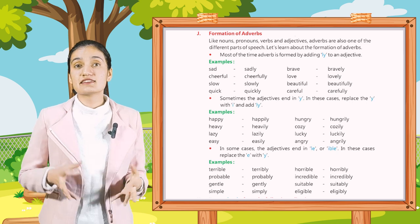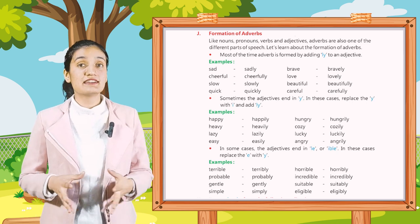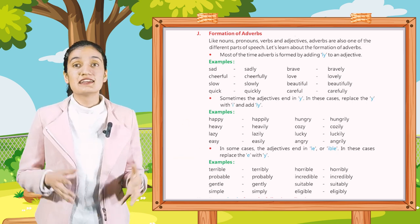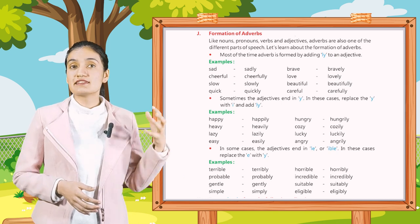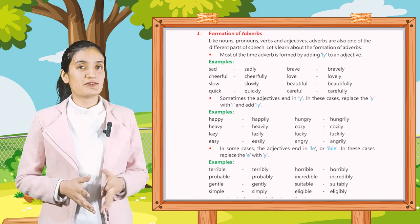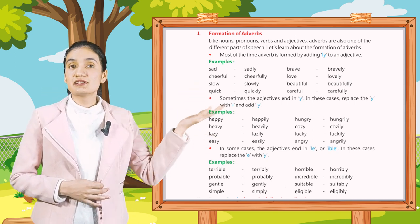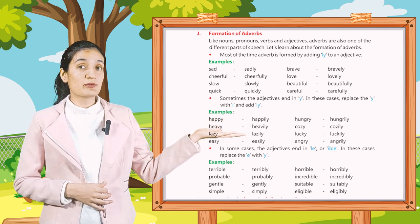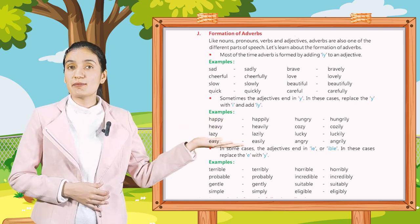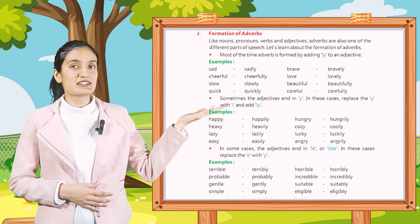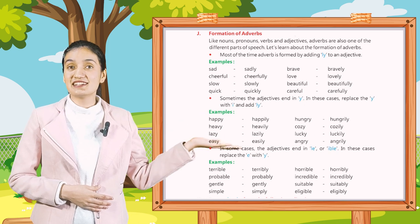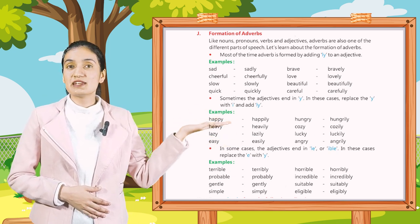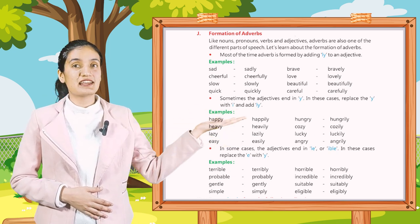In some cases the adjectives end in '-le' or '-ible'. In these cases, replace the 'e' with 'y'. For example: terrible → terribly, horrible → horribly, probable → probably, incredible → incredibly, gentle → gently, simple → simply, eligible → eligibly.